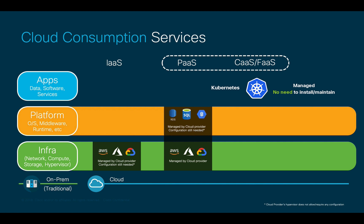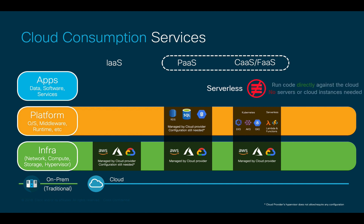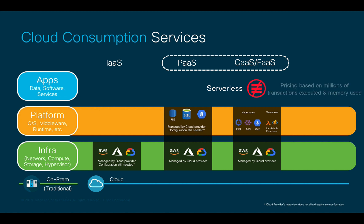Kubernetes-based PaaS offerings include EKS, AKS, and GKE from AWS, Azure, and Google respectively. Function as a Service is a type of serverless offering that allows organizations to directly run code on a cloud provider without worrying about the underlying CPU, memory, and operating system. Instead of paying for a VM along with its resources to run their code, customers using Function as a Service are typically charged for millions of function executions and per gigabyte allocated to a function every second.